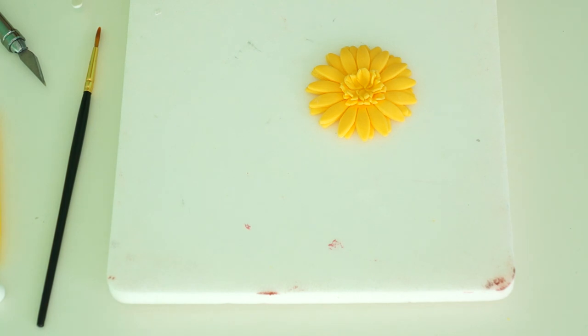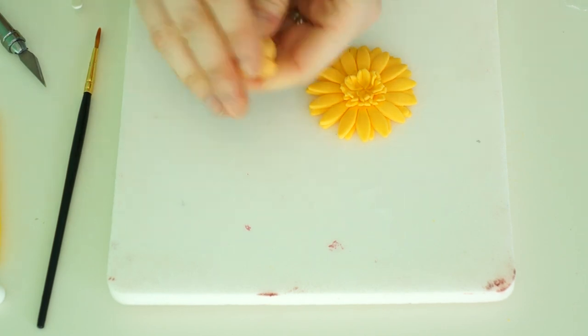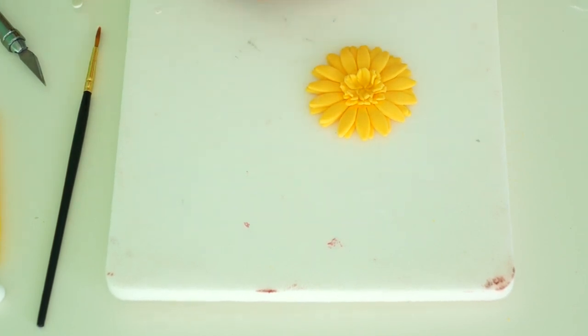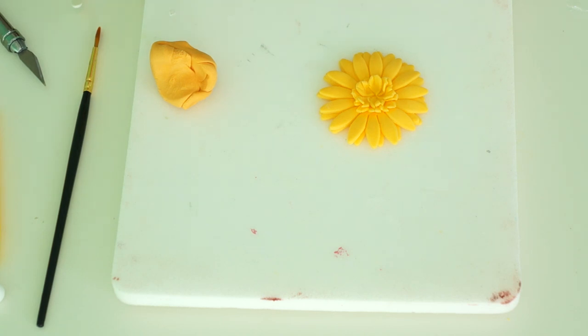And then what we want to do now is just create the center. So I've got my slightly darker yellow floral paste. There's two ways you can either do this. You can either take your daisy stamp and find one that would work for that size.